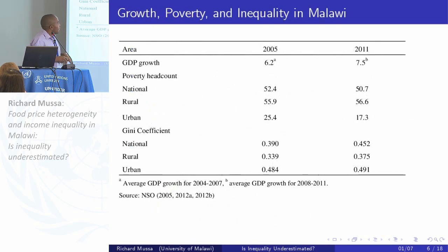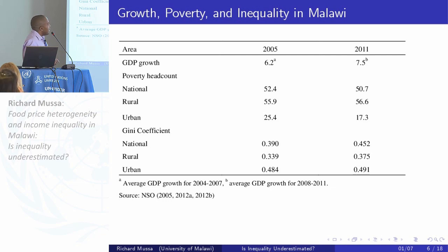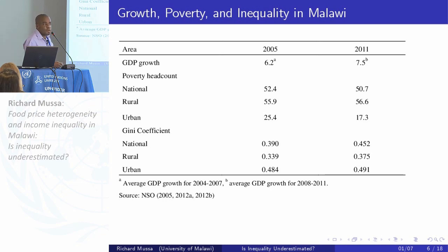Looking at the growth figures: Malawi was growing at 6.2% on average for 2005-2007, and then at 7.5% between 2008 and 2011 — these are high levels of economic growth. But looking at poverty headcounts at the national level: 52.4%, and five years later 50.7% — a marginal decline. In rural areas there's actually a marginal increase in poverty. The Gini coefficient also shows an increase in inequality: it was 0.39 in 2005 and goes up to 0.452, with similar patterns in both rural and urban areas.